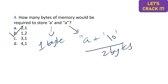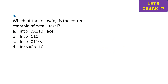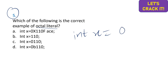So the answer is 1 and 2 — option B. The fifth question asks which is the correct example of an octal literal. In C, octal literals are represented by adding a leading zero — for example, 0110. Option C is the correct answer. If you want to find the value of integer x in decimal, the values would be 0, 8, 16, 24.